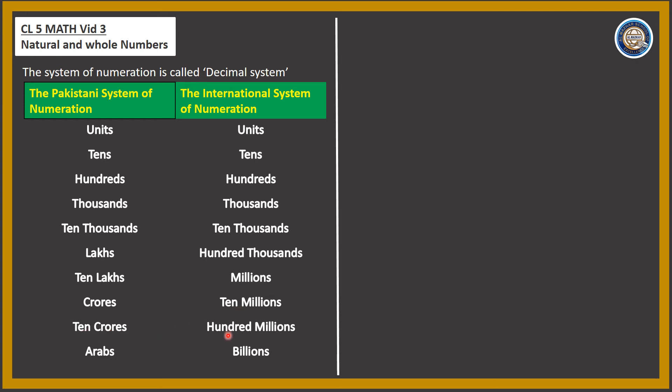Then in the Pakistani system we have crores, ten crores, and Arabs. In the International system this corresponds to billions. We need to remember this table.